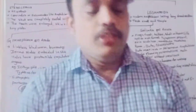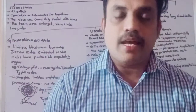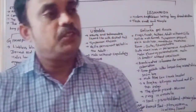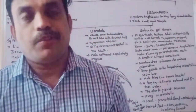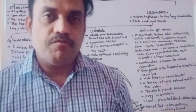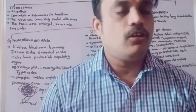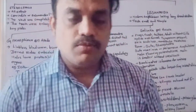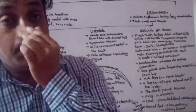Good morning, everyone. Today we are going to discuss about amphibians. We already learned about the characteristic features of amphibians. Amphibians are the first vertebrates living on land and water. Amphibians are poikilothermic — cold-blooded animals. Now we are going to discuss about the classification of Amphibia.